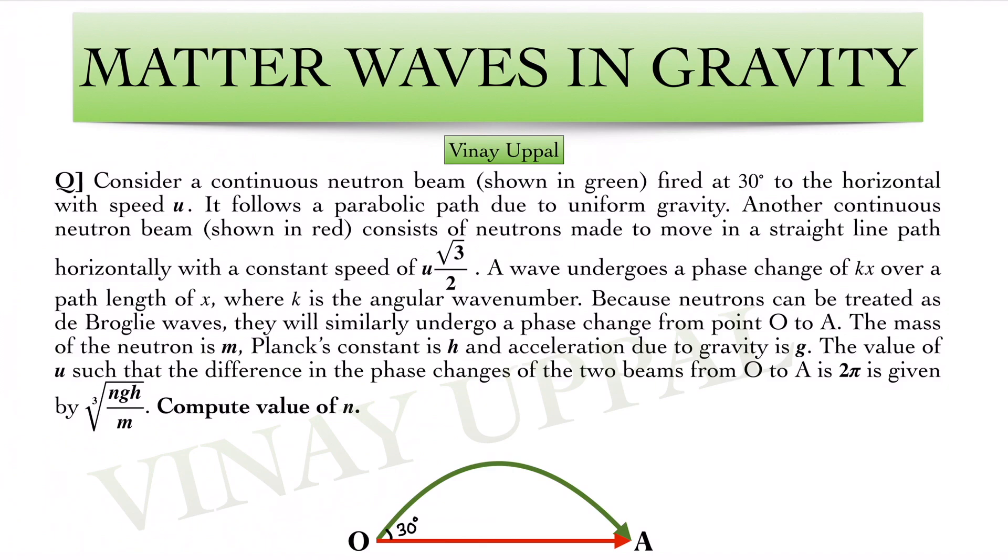Let us just read the question once. Consider a continuous neutron beam shown in green, fired at 30 degrees to the horizontal with speed u. This is the green beam. It follows a parabolic path due to uniform gravity. Another continuous neutron beam shown in red consists of neutrons made to move in a straight line path horizontally with a constant speed of u√3/2. This is the red beam.